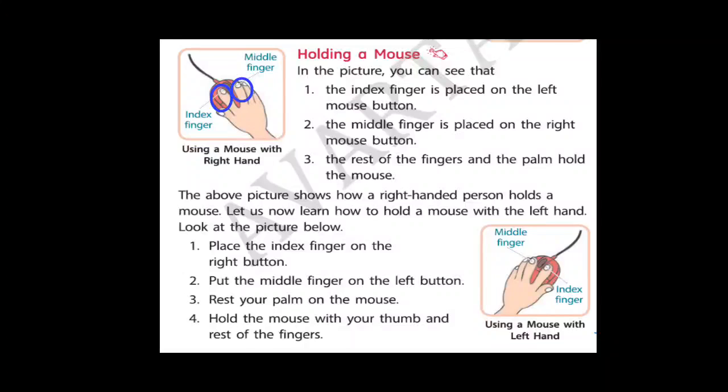The above picture shows how a right-handed person holds a mouse. Let us now learn how to hold a mouse with the left hand. Look at the picture below. Place the index finger on the right button and put the middle finger on the left button. Rest your palm and fingers on the mouse. You will hold the mouse with your thumb and rest of the fingers. Normally, a right-handed person holds the mouse like the picture above has shown. But sometimes some persons use their left hand to write and to hold a mouse and other things. This is how we can hold with the left hand.